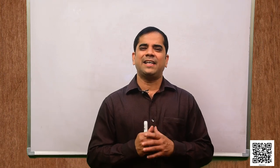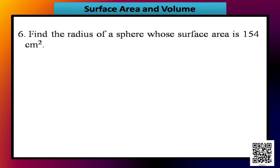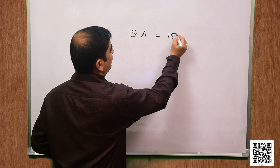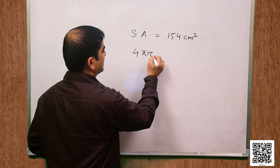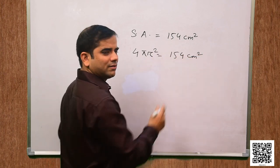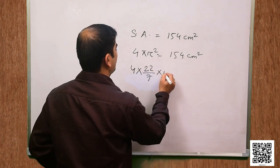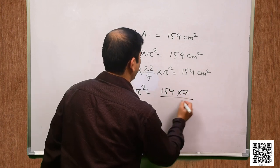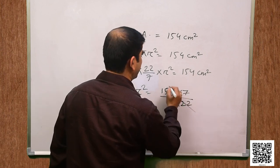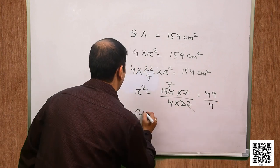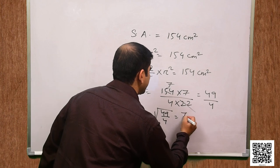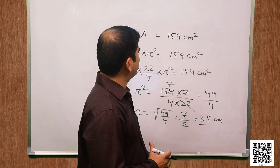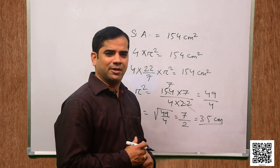Let us now solve question number 6. It says find the radius of a sphere whose surface area is 154 cm squared. Surface area is given as 154 cm squared, so 4 pi r squared equals 154. That gives 4 into 22 by 7 into r squared equals 154, so r squared equals 154 into 7 divided by 4 into 22, which is 49 by 4. Therefore r equals 7 by 2, or 3.5 cm.